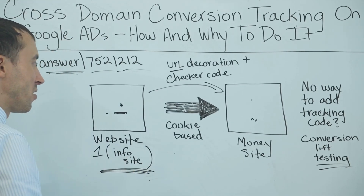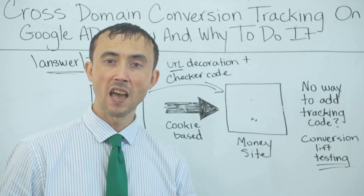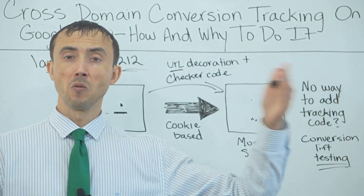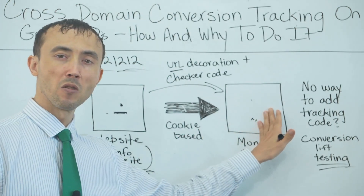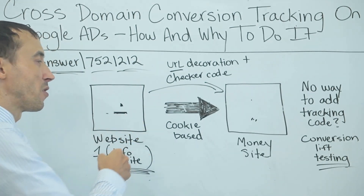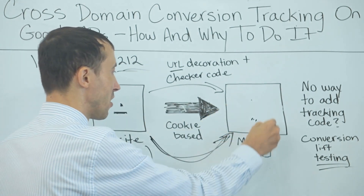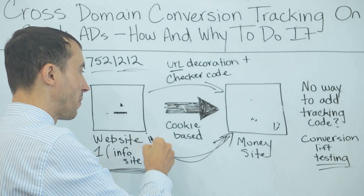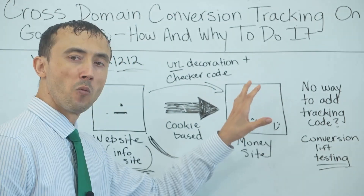You send people to an information site that gets the person warmed up on how good your product or service is — because what somebody else says about you is four times as effective as what you can say about yourself. A percentage of the people will go to your site from that site. The people who get to the final money site are going to convert at around a 30% rate. You might say: why send them to a first site when only 15% make it to the second? The reality is if you send them directly, you get a 1% conversion rate, but with the prelander, 15% make it and one in three converts — giving you an overall conversion rate of 3 to 4%.